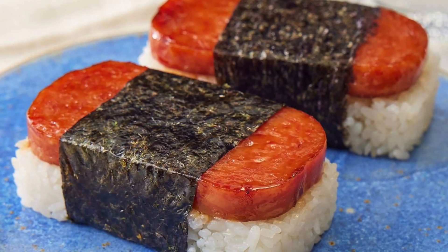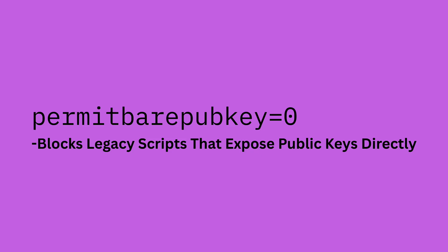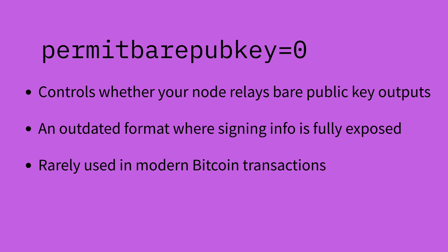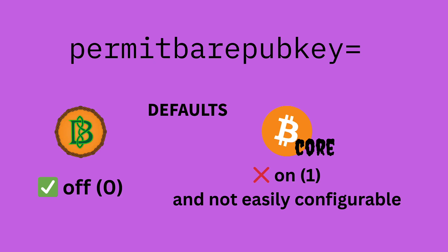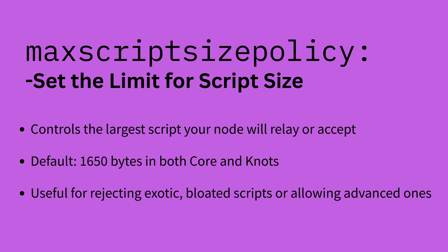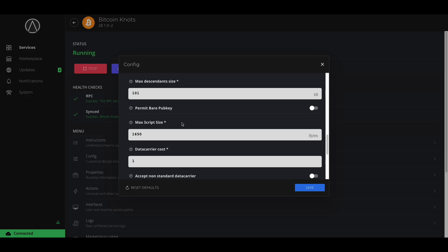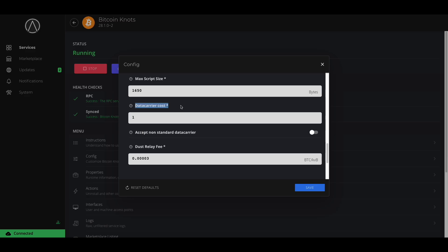Permit bare pubkey is a setting that controls whether your node relays an old transaction format that puts all the signing info right out in the open. Like permit bare multi-sig, these transactions are part of Bitcoin's history but mostly phased out — disabled by default in Knots and defaulted to on in Core, where it's not as easily configurable. Max script size sets the biggest script your node will relay or accept into the mempool. The default is 1,650 bytes in both Core and Knots, but Core hard-codes it. Bitcoin Knots gives you the option to adjust it, so if you want to reject large exotic scripts that eat resources, or allow more experimental ones, the choice is yours.